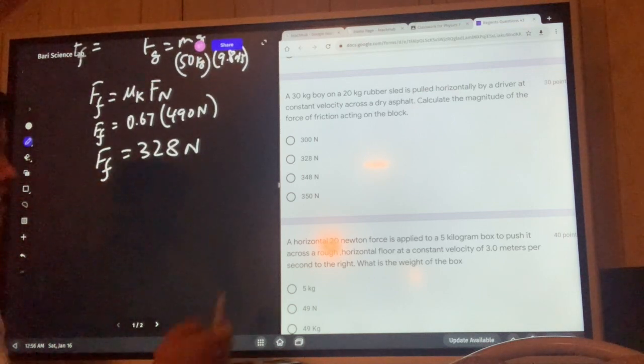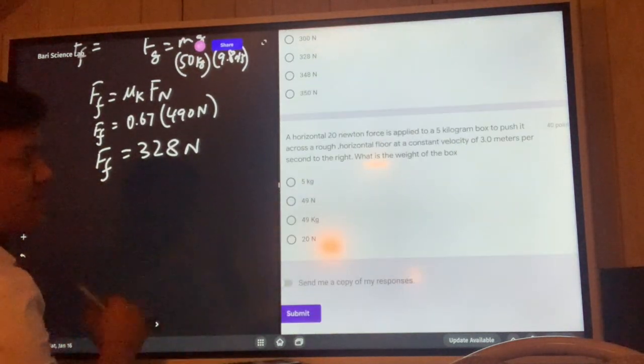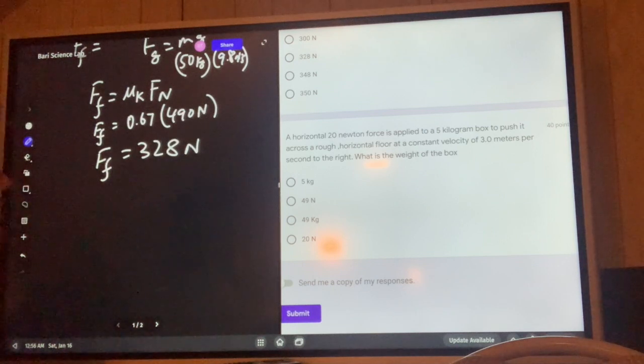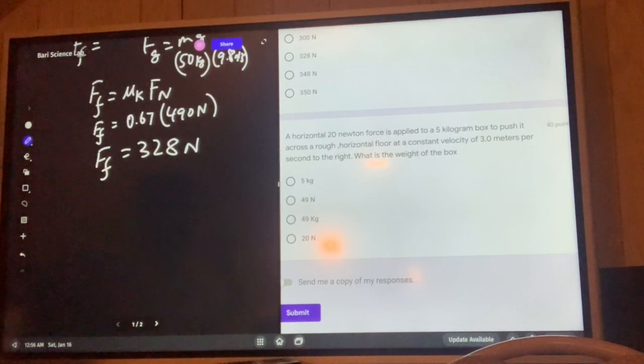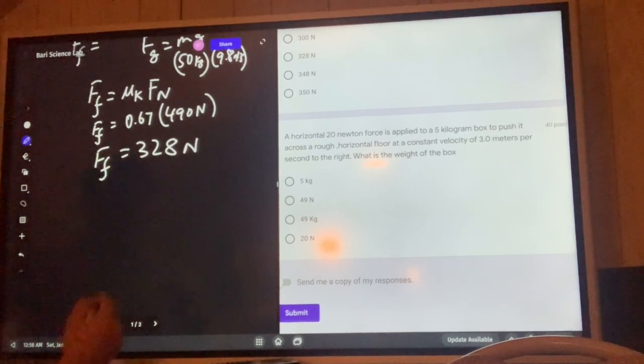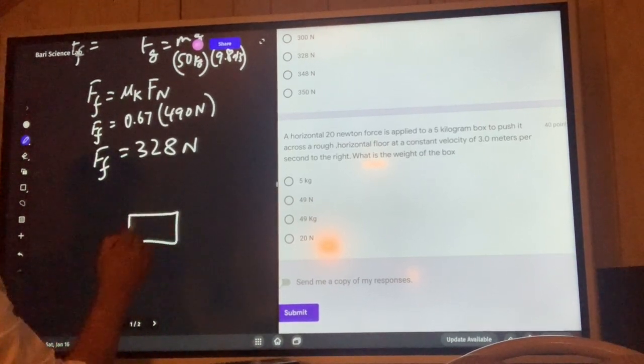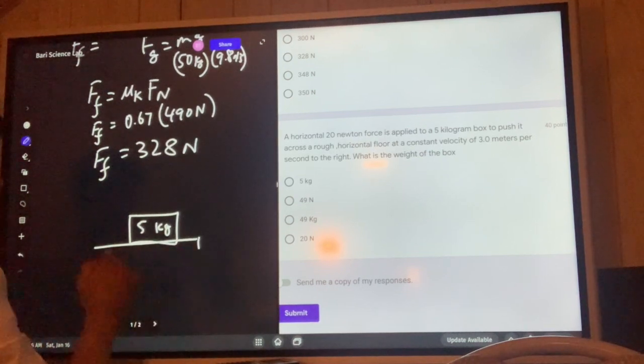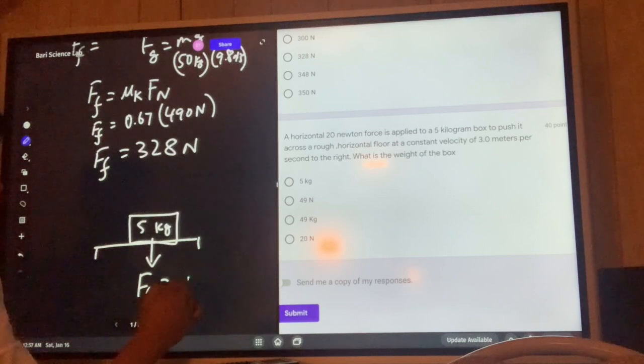Now let's take a look at the last part. A horizontal 20 newton force is applied to a 5 kilogram box. This basically asks you to find the weight of the 5 kilogram box sitting on the table. We did it many times, so Fg equals mg.